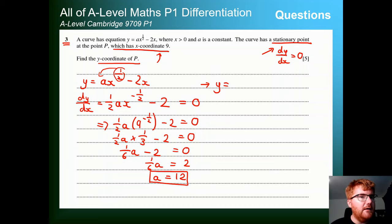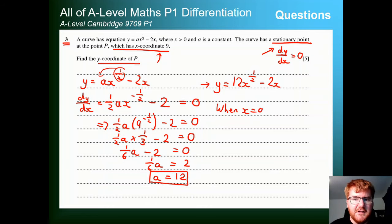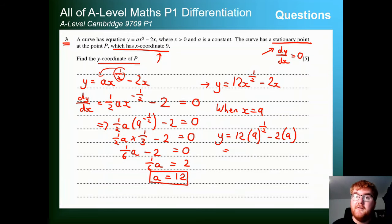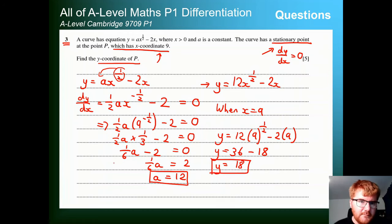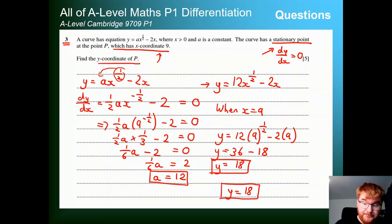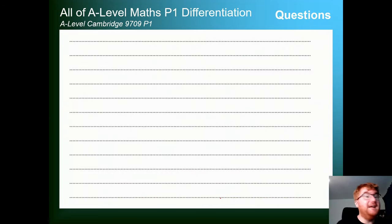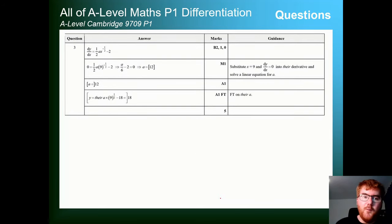Now we can express the equation as y = 12x^(1/2) − 2x. When x = 9: y = 12×√9 − 2×9 = 12×3 − 18 = 36 − 18 = 18. So the y-coordinate of P is 18. That's our final answer: y = 18.